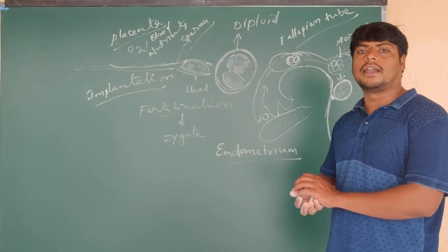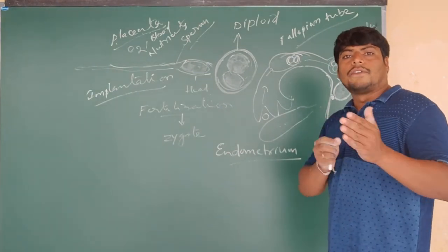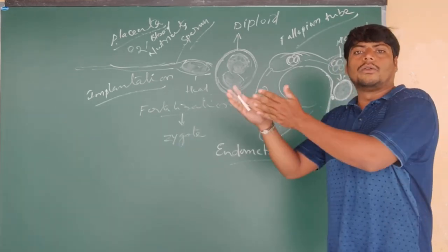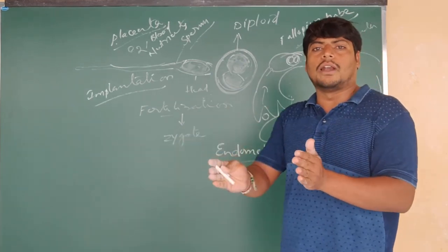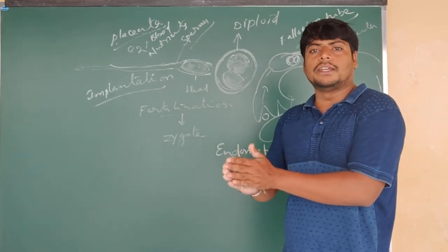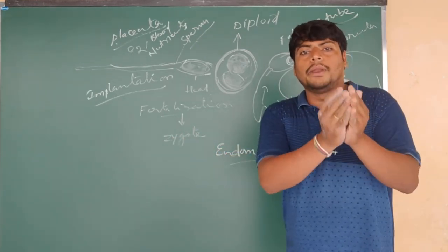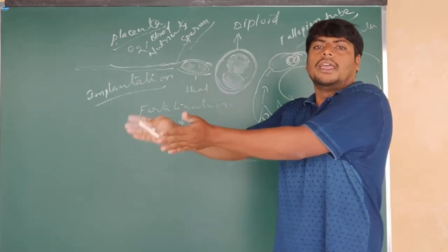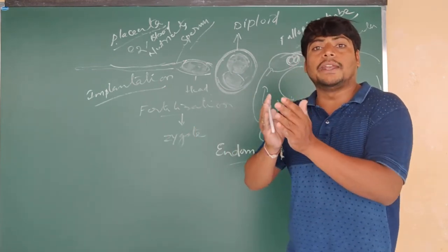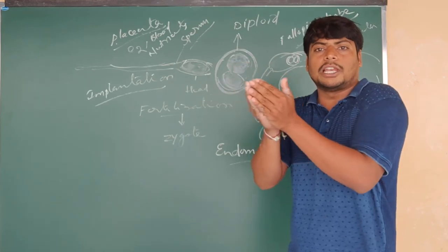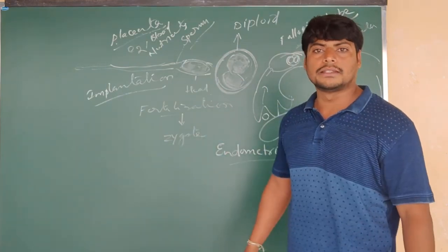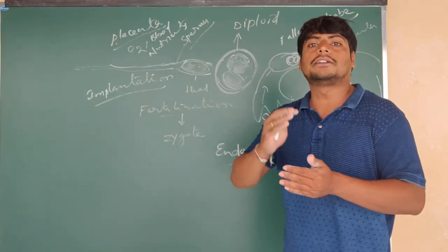The uterus is also called the womb. The period from the earlier formation of the zygote to the complete development of the young one is called the gestation period. In human beings, the gestation period is around 40 weeks or 9 months — that is the duration during which the mother carries the baby.